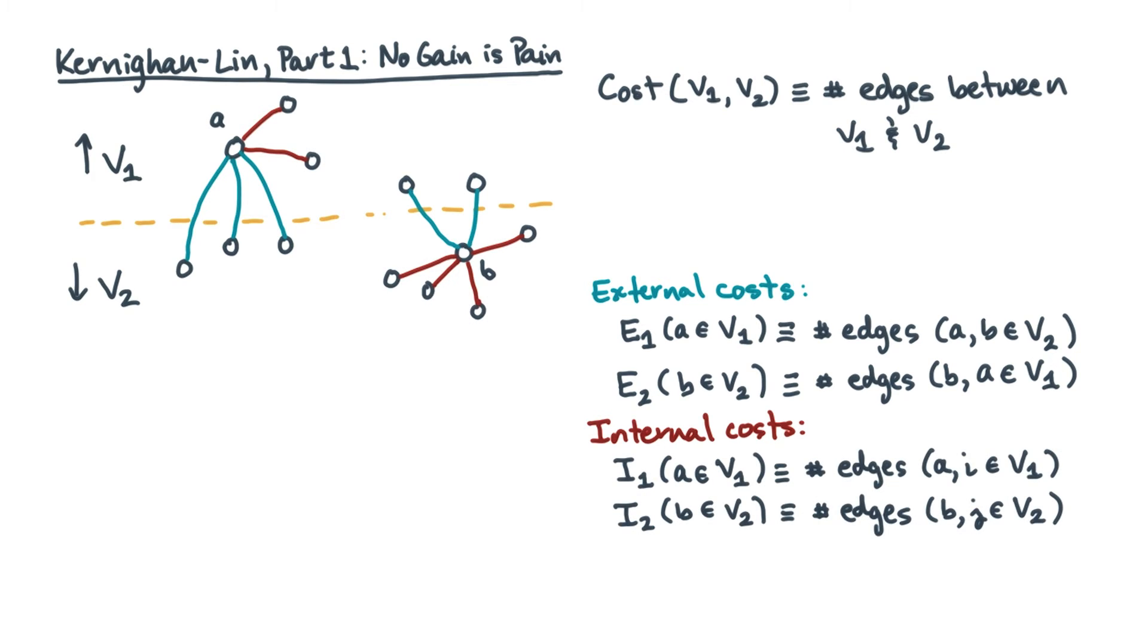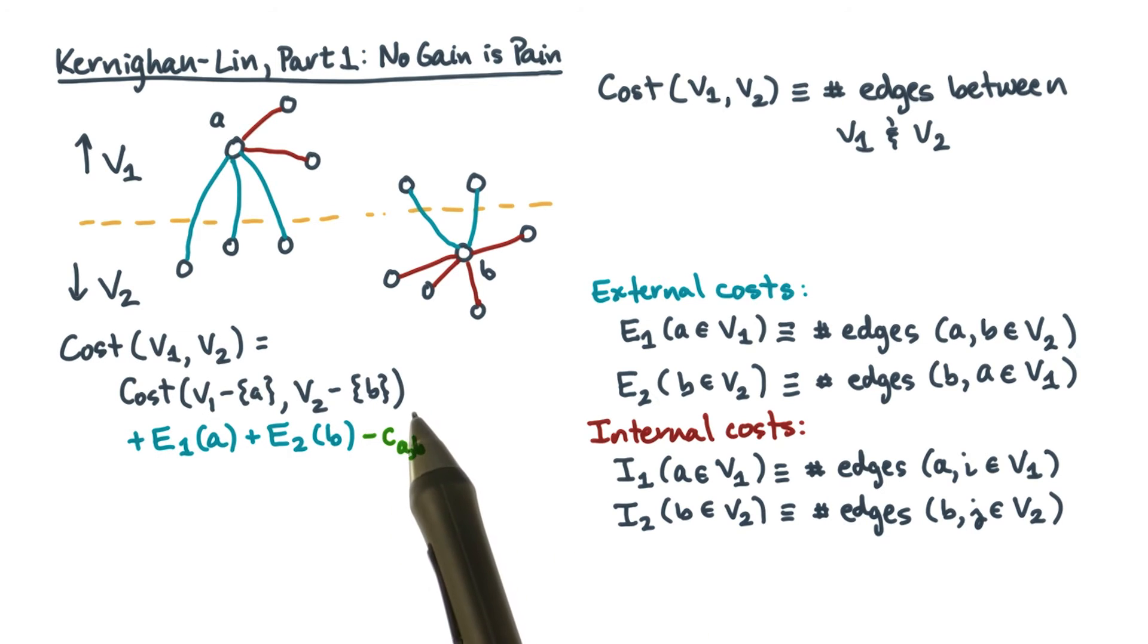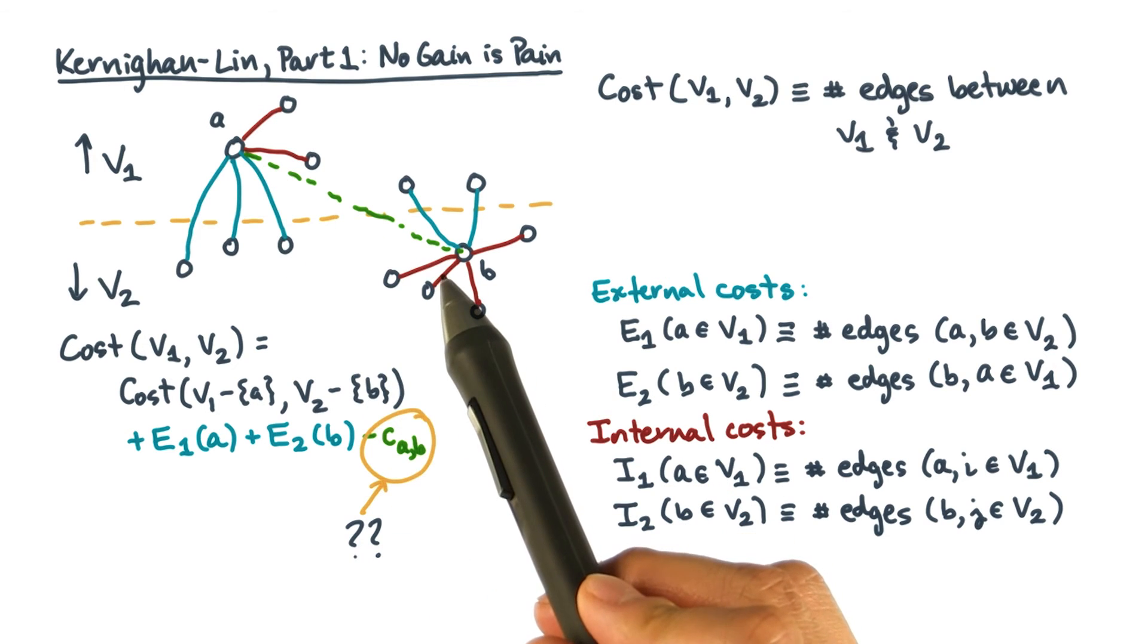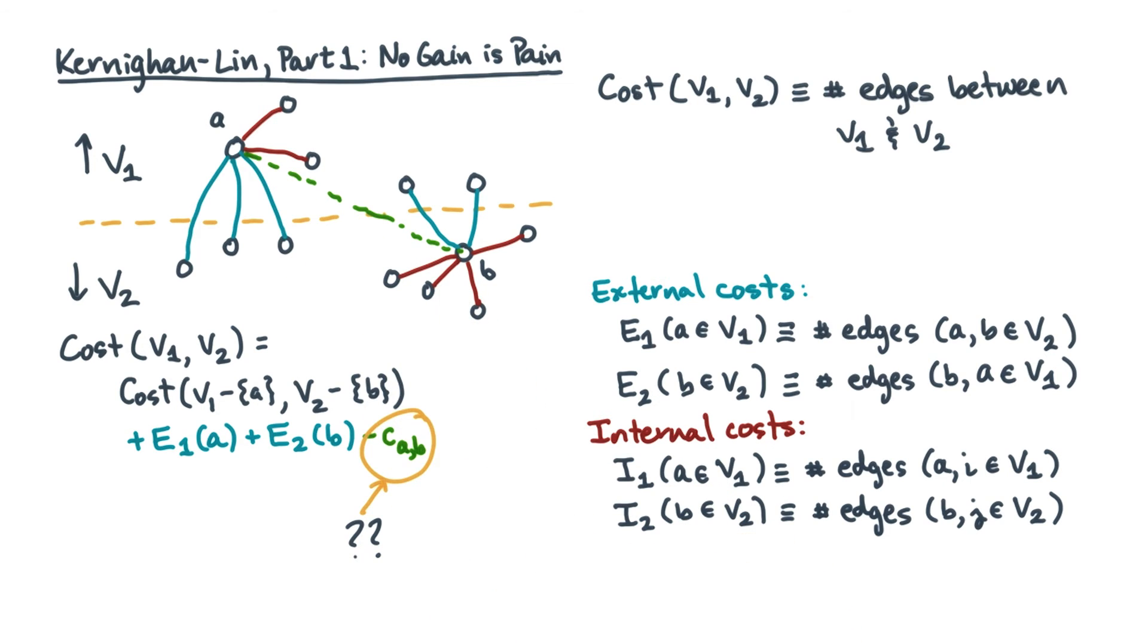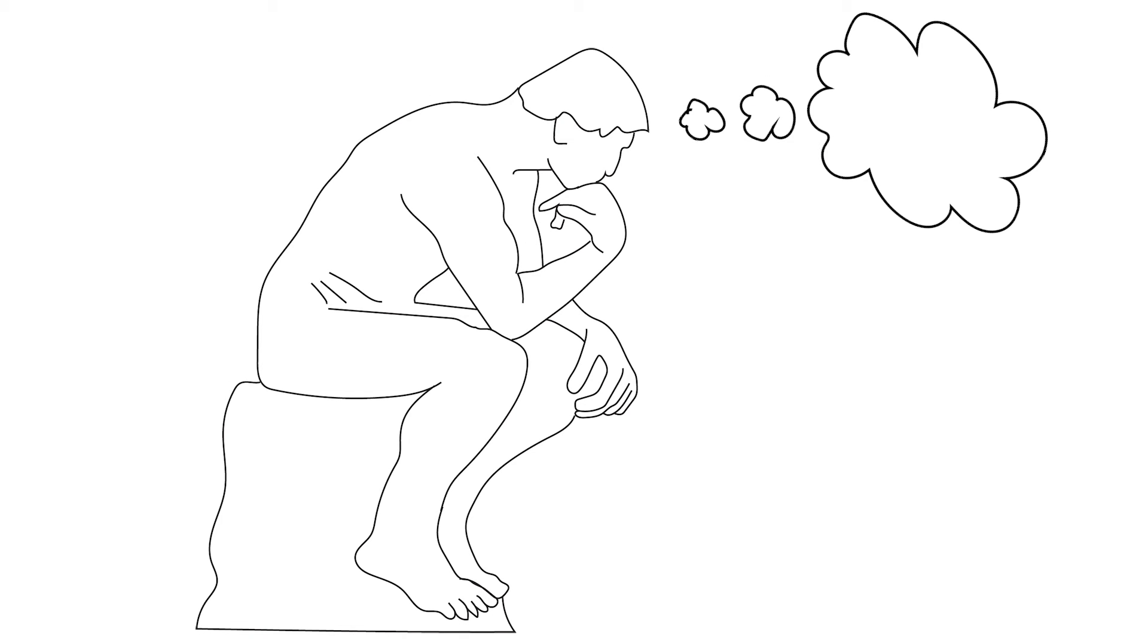From these definitions, you can write down the cost of a partition as follows. It's the cost of the partition ignoring A and B, plus the external cost of A, the external cost of B, and minus some constant. So what's this constant? You need that constant to account for a possible edge between A and B. The constant is 1 if there's an edge there and 0 otherwise. But why subtract it? Ah, that is a terrific question, and you should take a moment to ponder it.